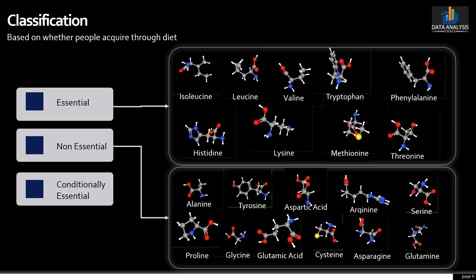Conditionally essential amino acids is the third group. Conditionally essential amino acids are usually not essential, except during times of illness and stress. They include arginine, cysteine, glutamine, tyrosine, glycine, ornithine, proline, and serine. You do not need to eat essential and non-essential amino acids at every meal every day, but getting a balance of them over the whole day is important for the metabolic activities of our body.